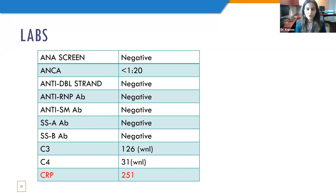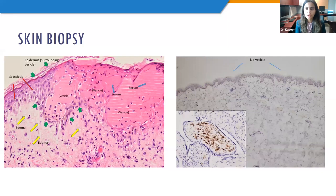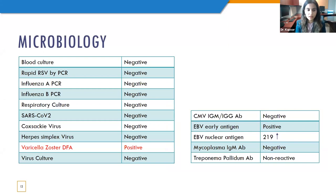Rheumatological workup was done but everything was negative. C3 and C4 were within normal limits. The only thing elevated was CRP at 251. A skin biopsy was done — it showed some edema and neutrophilic infiltration, but no definitive conclusion. Immunostaining for varicella zoster or other infections was negative since no vesicular lesion was found. Microbial cultures were also negative. Then another vesicle sample was sent, specifically for DFA — direct fluorescent antibody — and that was positive for varicella zoster. That's when we knew this was varicella zoster and everything else was negative.